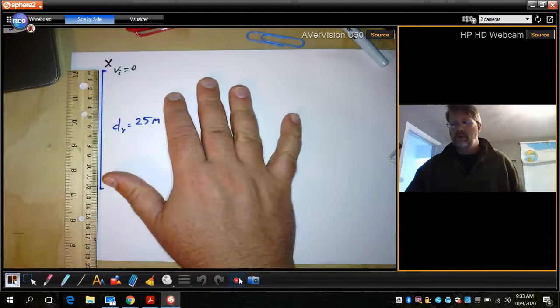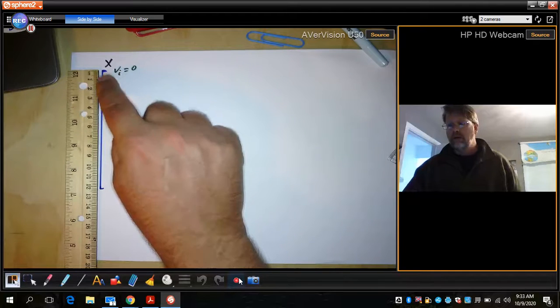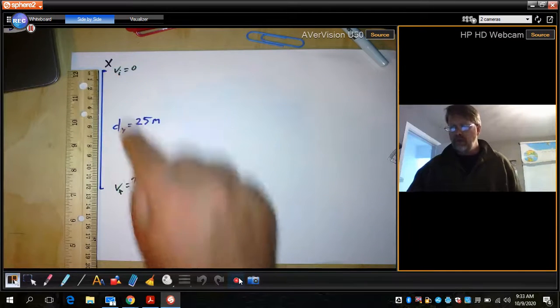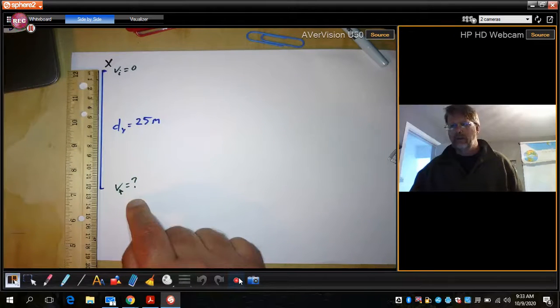This example is looking specifically at if we have a monkey at the top of the tree and he falls all 25 meters, what is his velocity going to be at the bottom of the tree?